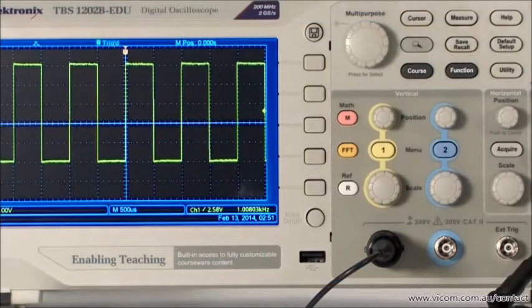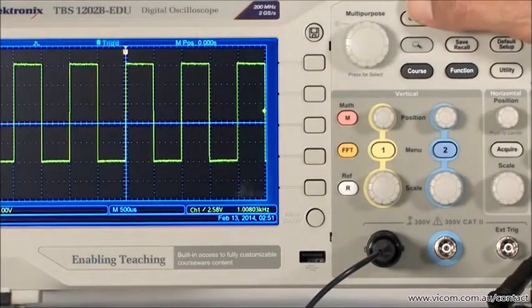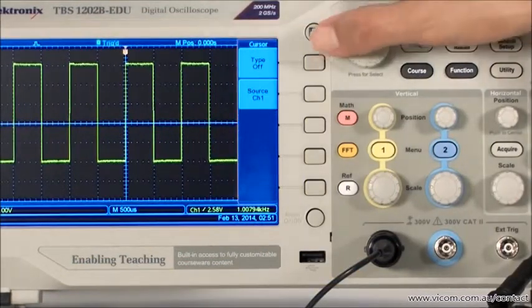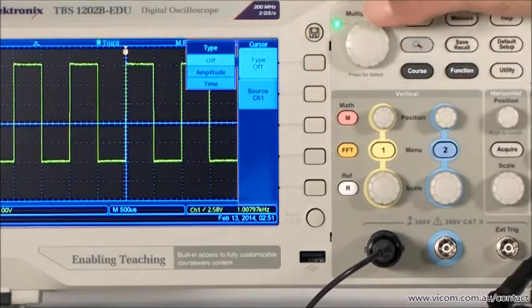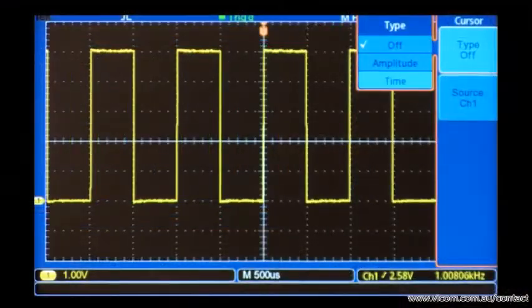Cursors can also be used to make voltage and time-related measurements. They incorporate the scale settings to read out directly in volts and seconds. To measure voltage, set the measurement type to amplitude.